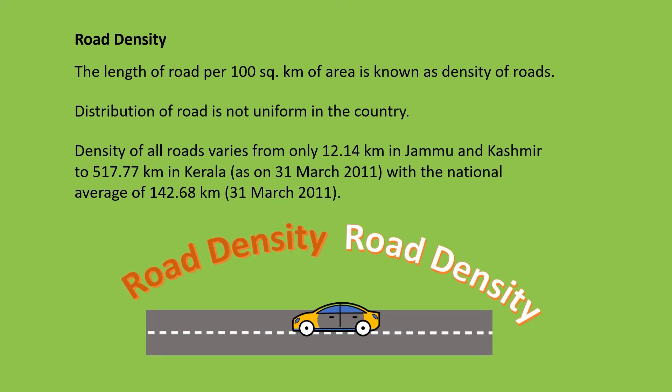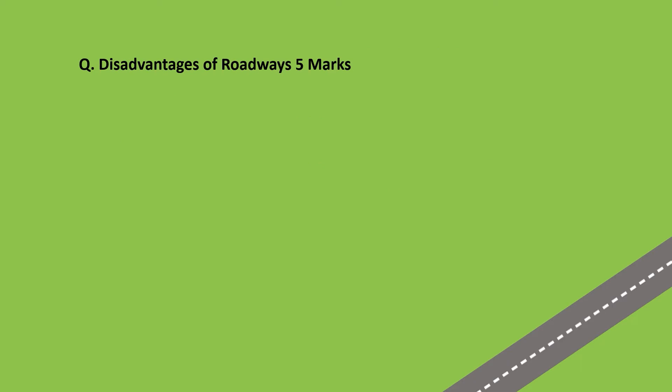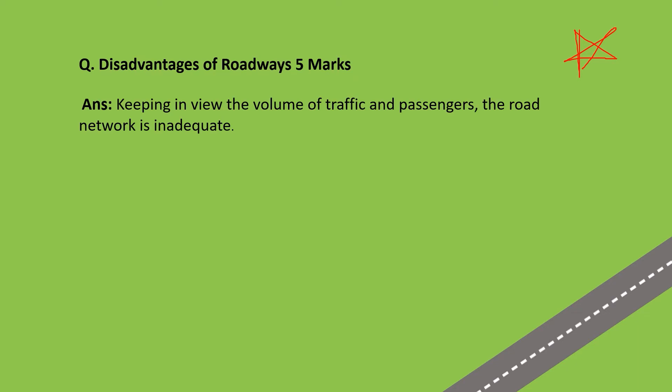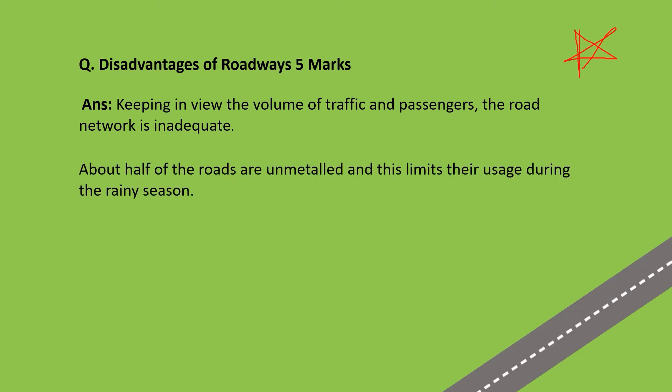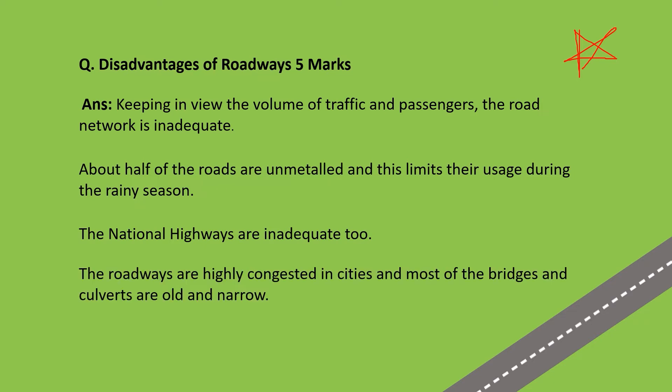This video is moving faster because it is a big chapter made into one video to help you cover all the important questions so you get excellent marks. Disadvantages of roadways — five marker, very important: keeping in view the volume of traffic and passengers, the road network is inadequate; about half of the roads are unmetalled, limiting their usage during rainy season; national highways are inadequate too; roadways are highly congested in cities; and most of the bridges and culverts are old and narrow.